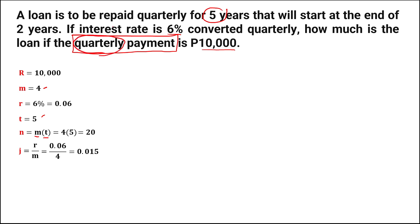Since the loan starts at the end of 2 years and payments are quarterly, we have 4 times 2, which is 8. Then from the formula, we always subtract 1, so 4 times 2 equals 8, minus 1. Therefore, the periods of deferral K is equal to 7.